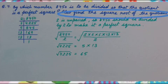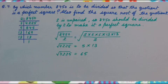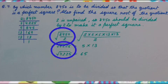Second part is also find the square root of the quotient. So 8450 divided by 2, that is 4225.